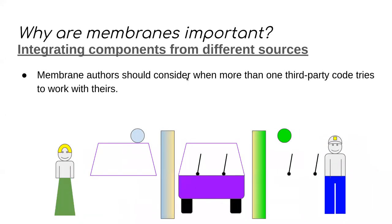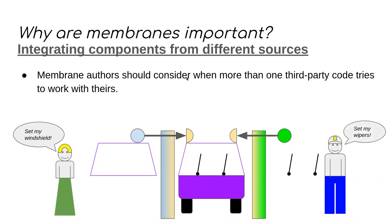Here's another example of why membranes can be interesting, and admittedly this one is more theoretical. If there's a shared car object and Alice wants to set a windshield, maybe the membrane will allow that. If Bob wants to set windshield wipers on the car, maybe the membrane will allow that too. But if the windshield and the wipers don't work together well, bad things can happen. Theoretically, a membrane can prevent this kind of problem.